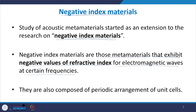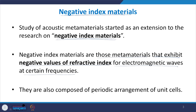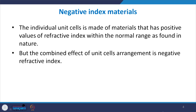People interested in this topic can go back into the literature and search for such materials — they were used to manipulate electromagnetic waves. A similar concept was then borrowed to build materials which can manipulate sound waves. Just like acoustic metamaterials, these negative index materials also have a periodic arrangement of different unit cells, and the individual unit cells are composed of conventional materials. The unit cells themselves have a positive refractive index, but the combined effect of their arrangement results in negative refractive index.